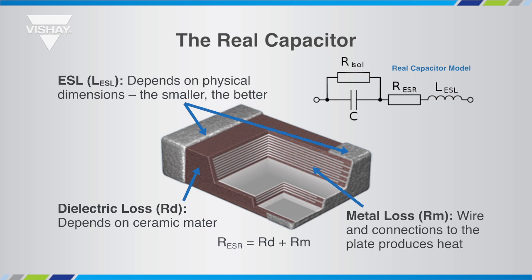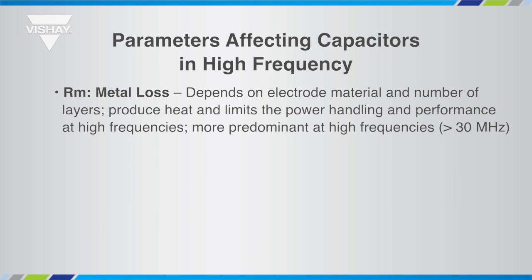The ESL, or Equivalent Series Inductance, arises due to the parasitic inductance present in any conductor. This parameter depends on the physical dimensions of the capacitor, being more dominant as the case size of the capacitor increases.